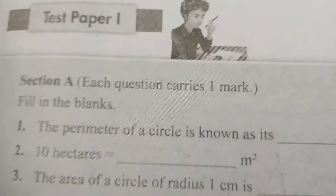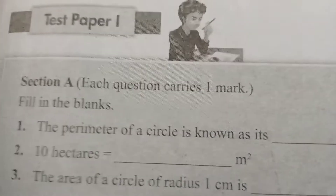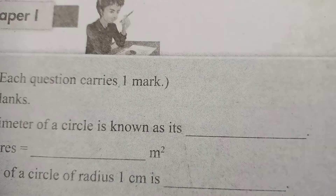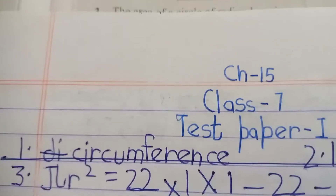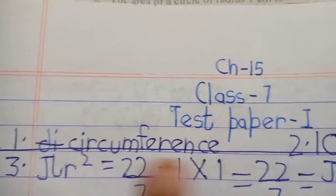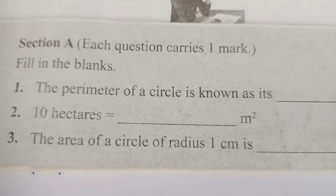First question: the perimeter of a circle is known as what? The perimeter of a circle is called the circumference, as I have written here. Second question: 10 hectares is equal to dash meter square.